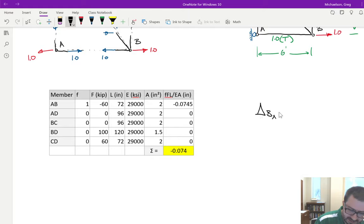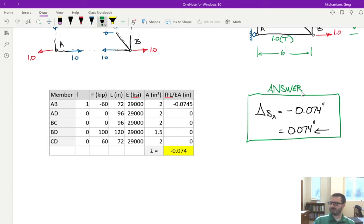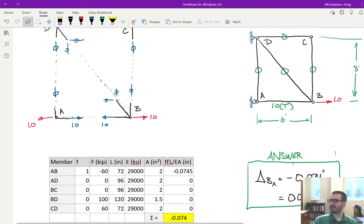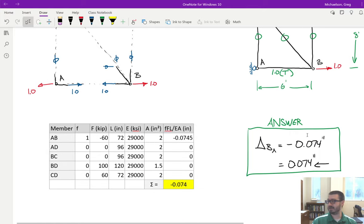So what that means is that the deflection at joint B in the X direction is negative 0.074 or 0.074 inches to the left. What happened was, if we go back to our virtual analysis, we assumed that the deflection was going to be going to the right. And then when we did the analysis, we ended up getting a negative answer. So that means it's going to the left. Whenever you get a negative value, it just means your assumption is incorrect.